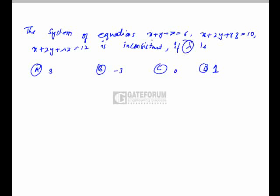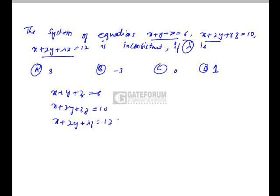The value of lambda for which the given equations are consistent. So, the given equations are x plus y plus z equals 6, x plus 2y plus 3z equals 10, and x plus 2y plus lambda z equals 12.